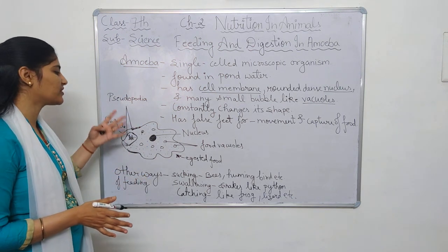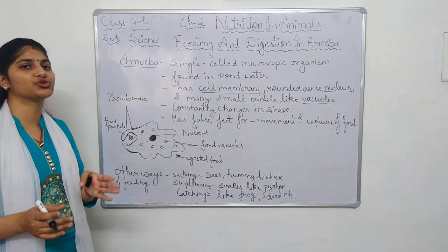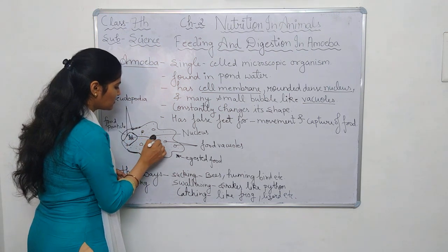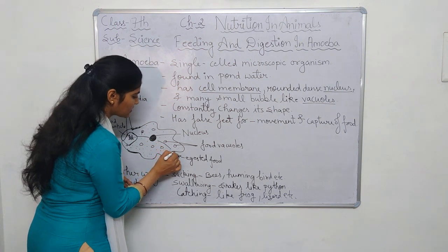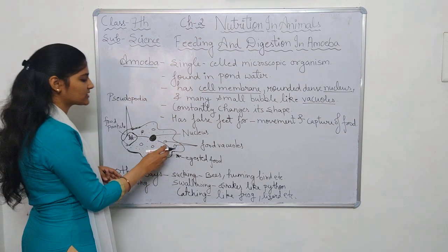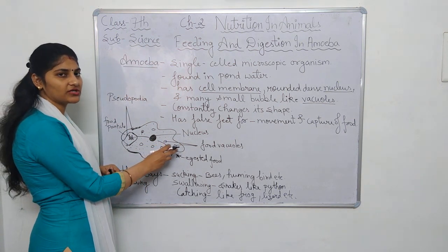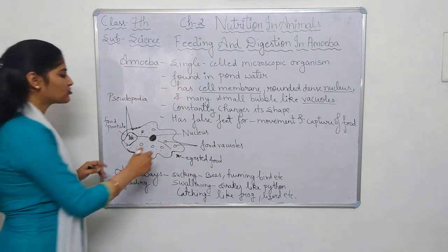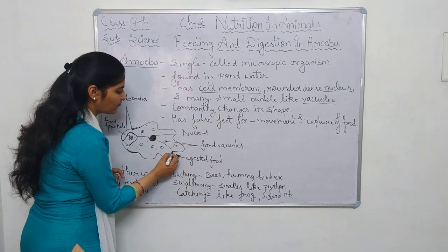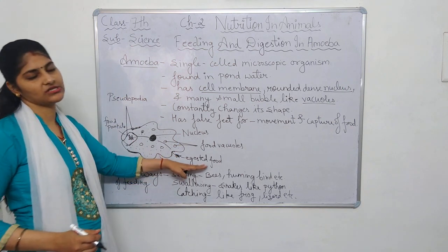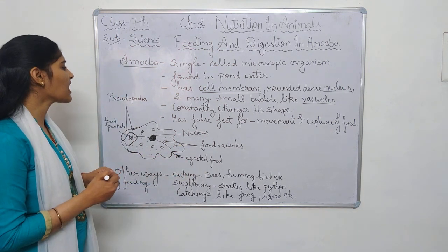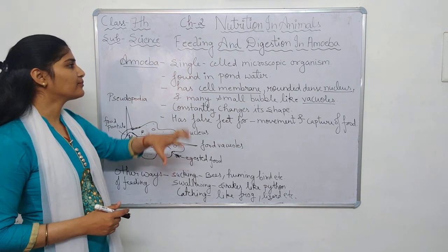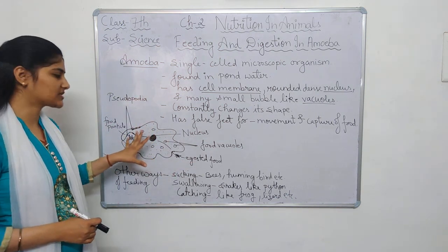After intake of food, its digestion, and release of energy, the waste needs to be ejected out. Amoeba does not have a particular site for ejection or ingestion, so the waste food particle gets ejected out from anywhere. This is how feeding, digestion, and ejection take place in amoeba.